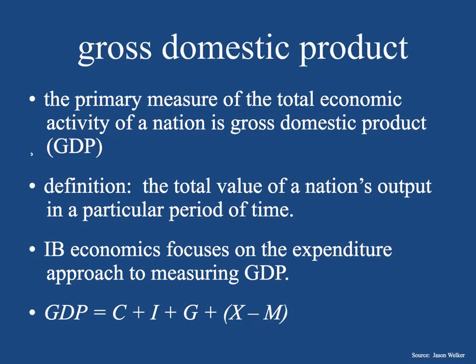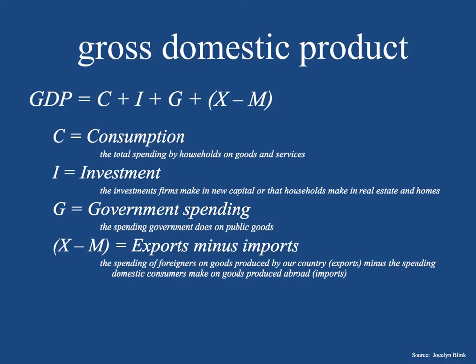So it's super important to understand gross domestic product. GDP equals C plus I plus G plus X minus M — get that in your brains. C equals consumption, which is the total spending by households on goods and services. Plus investment, I, which is the investments of firms — investments firms make in new capital, or that households make in real estate and home purchases.